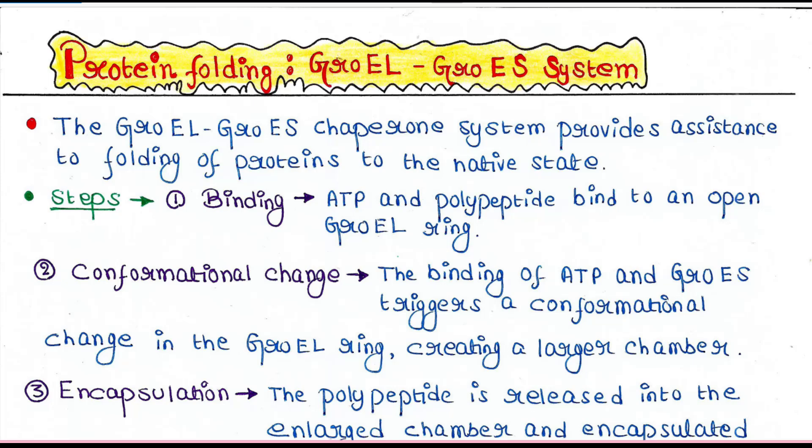So when misfolded or incompletely folded proteins are found in cells, they need to be properly folded first in order to execute their function in cells. The GroEL-GroES system is one of them which helps these proteins to be properly folded. The GroEL-GroES chaperone system provides assistance to folding of proteins to the native state.